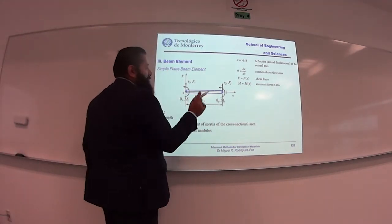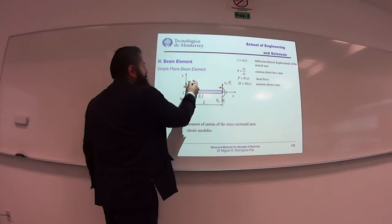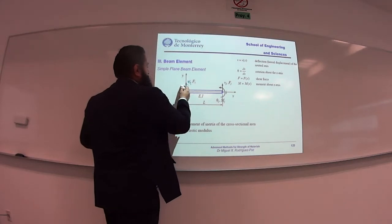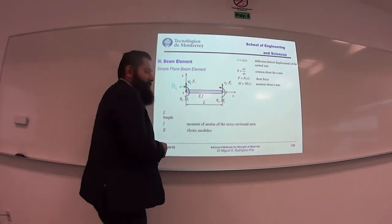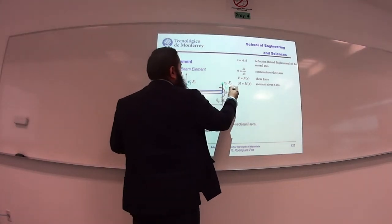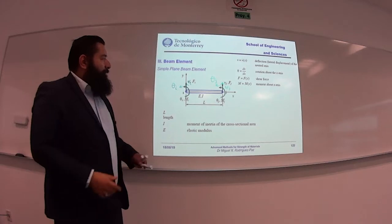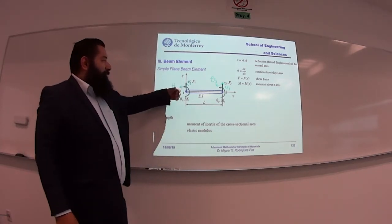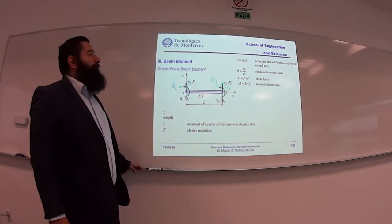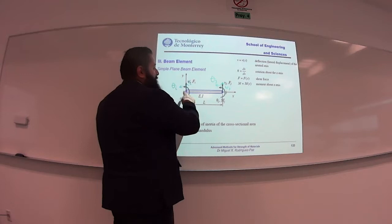We have two degrees of freedom per node for the beam element alone: one displacement in the vertical direction, which we call v_i, and one rotation, which we call theta_i. The same applies to the other node: one vertical displacement v_j and one rotation theta_j. So there are rotations for the bending effect and vertical displacement. This is a 2D element — we are looking at it on the plane, but it is a one-dimensional element on a 2D surface.